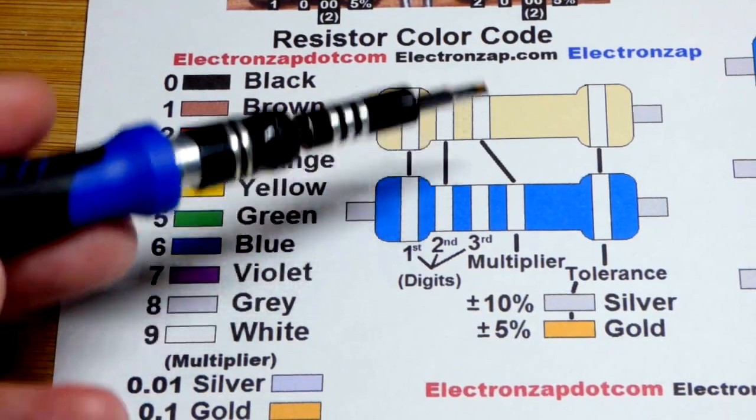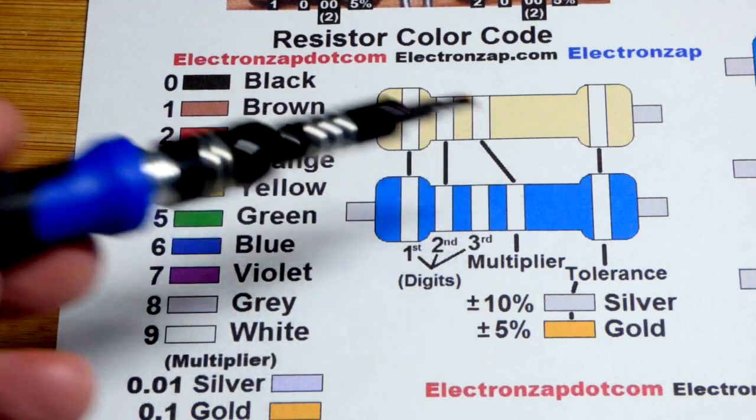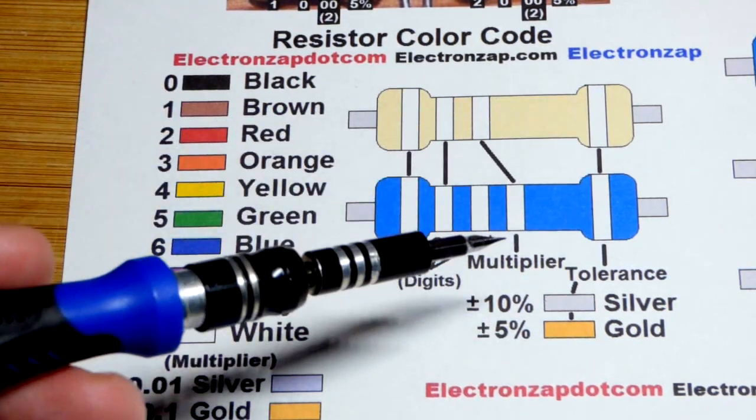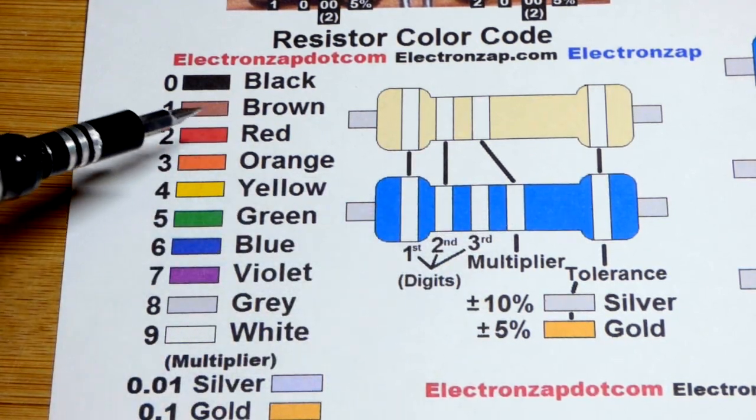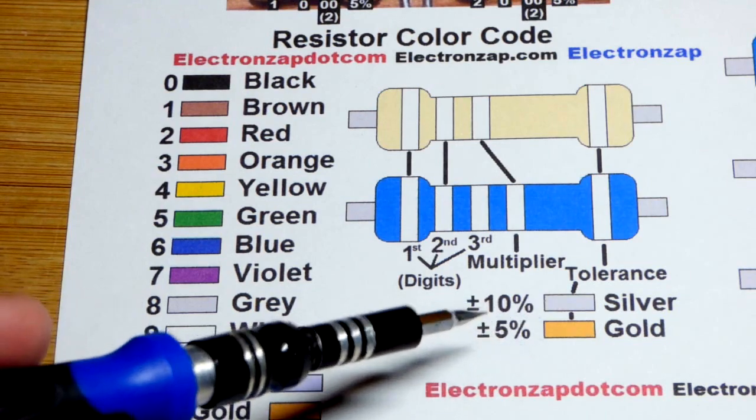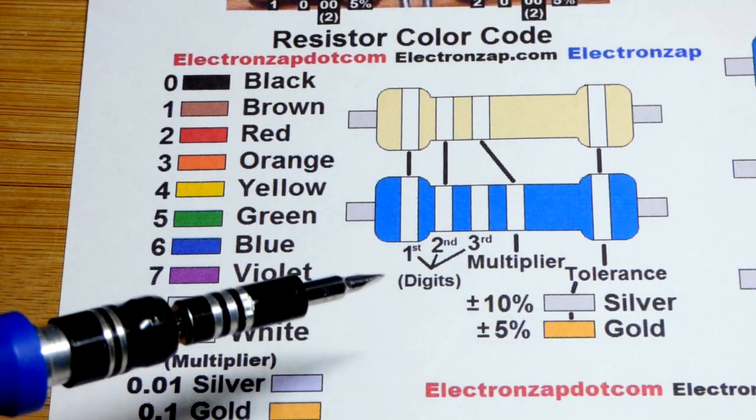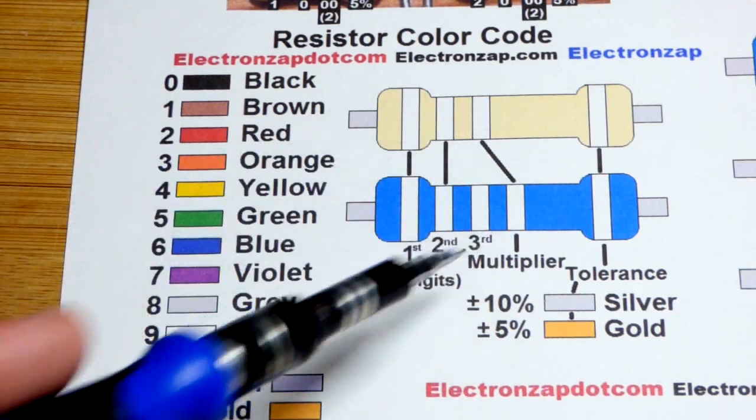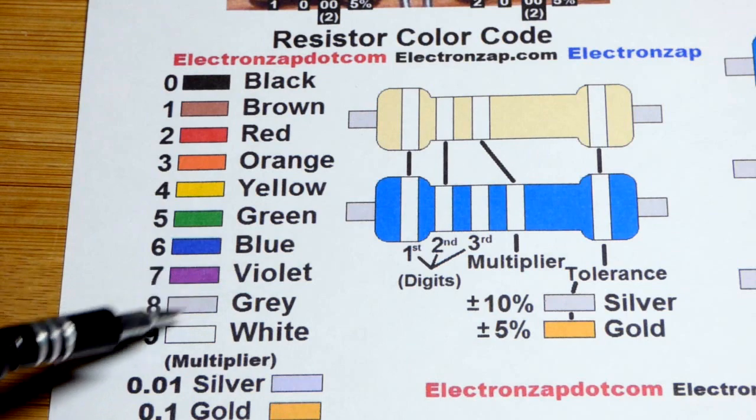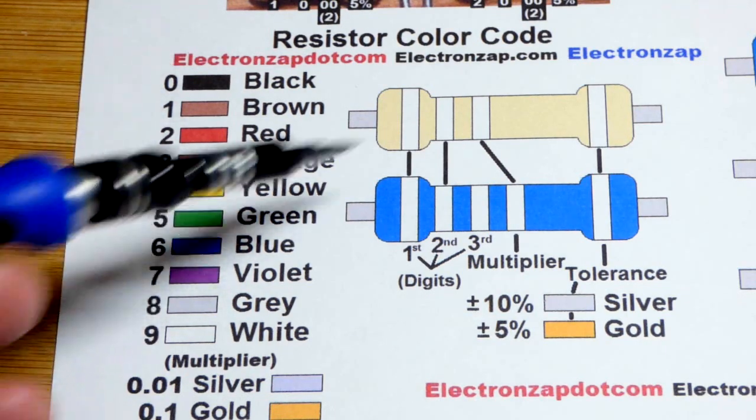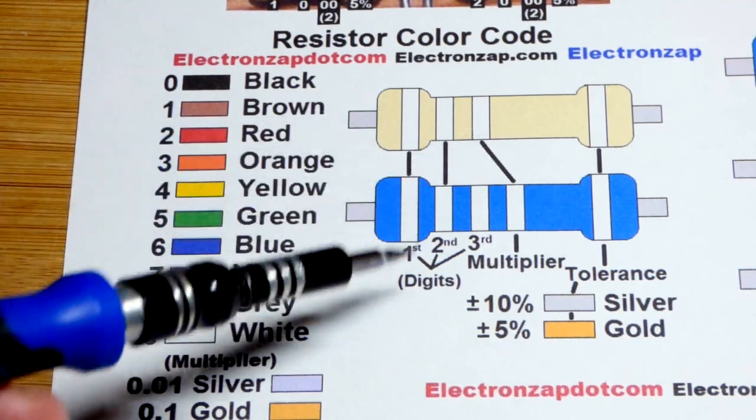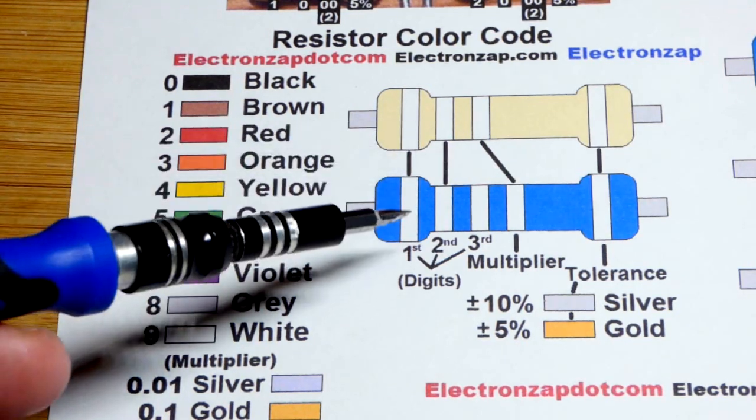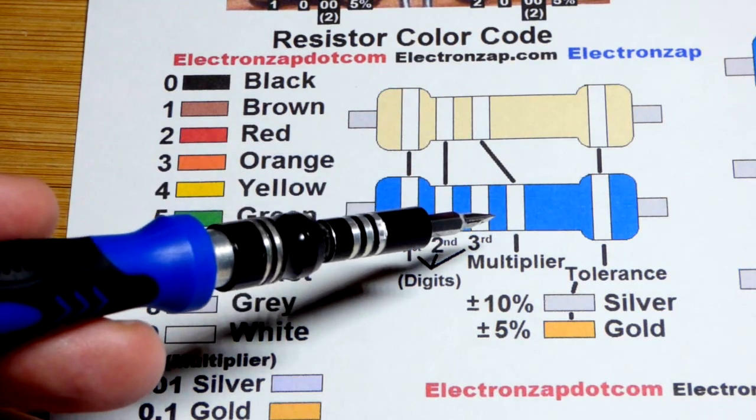The color code bands tell us the rated value and then it has a tolerance, a percentage it can be higher or lower. Gold is common for the beige ones and the blue ones it's typically brown for 1%. There's also silver but I never come across those. We want to get the tolerance to the right and then we have our value. So we have digits to begin with - there's usually two of them for a beige resistor. These are getting pretty rare, you might really just run across blue ones for the most part except for older equipment. Two digits for the beige and then three for the blue one usually.